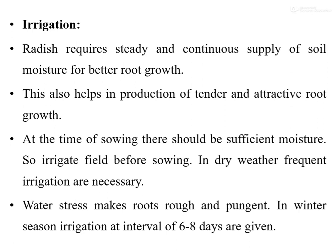Radish requires a steady and continuous supply of soil moisture for better root growth, which also helps in producing tender and attractive roots. Before sowing, the field should be irrigated to ensure sufficient moisture. In dry weather, frequent irrigation is necessary. Water stress makes the roots rough and pungent. In winter season, irrigation is given at 6 to 8 day intervals, which is best for root development.